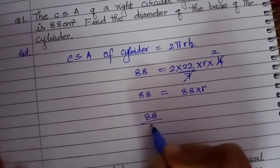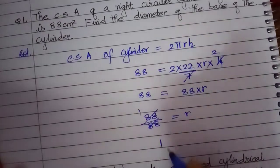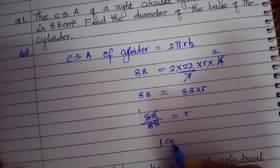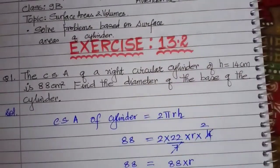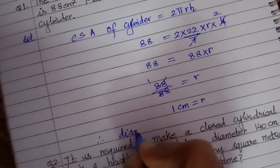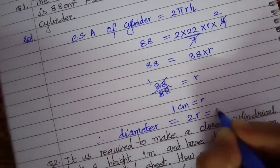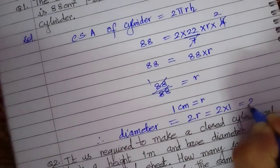If I want to find out R, it is 1. So 1 cm is R. But the question is what is the diameter of the cylinder? Therefore diameter is equals to 2R that is 2 into 1 that is 2 cm.